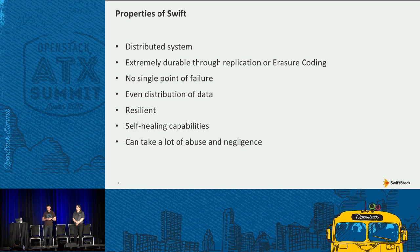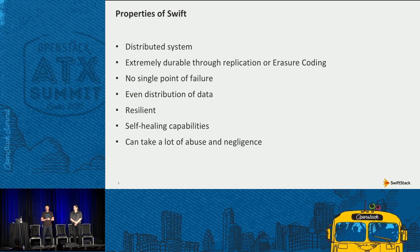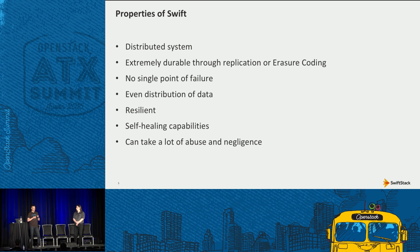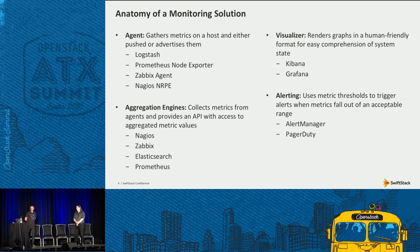Since there are lots of different machines and disks, there's no single point of failure. There's an even distribution of data, so a 4-terabyte drive and a 6-terabyte drive in the same system will both be at the same utilization percentage. It's a resilient system — you can do a lot of bad things to it and it will still continue working, with self-healing capabilities. If a disk dies or an object gets corrupted, it will replicate and maintain the required number of replicas. With Swift, there's really no rush to fix problems — you have time to think.